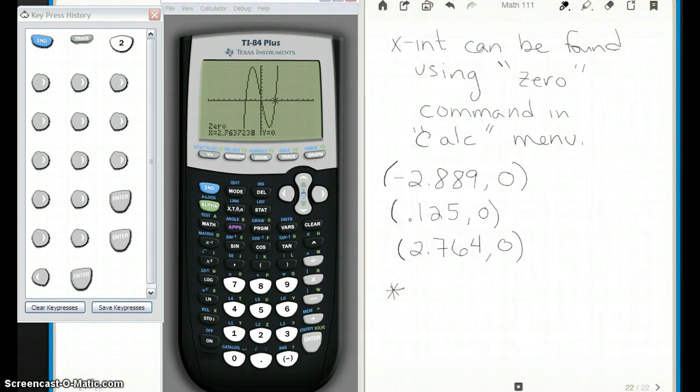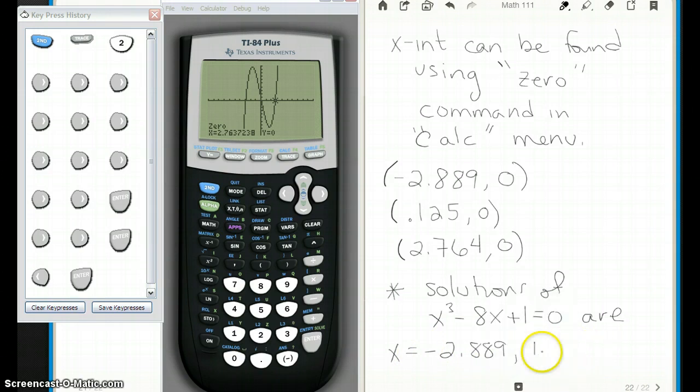So we can say here, the solutions of x to the third minus 8x plus 1 equals 0 are the following three values of x, x equals negative two point eight eight nine, comma, one point two five, or two point seven six four. Okay? Great. So three values of x that can solve this equation. You plug any of these values of x in here and you'll get a true statement, meaning you'll get zero on the left side equals already a zero on the right side.